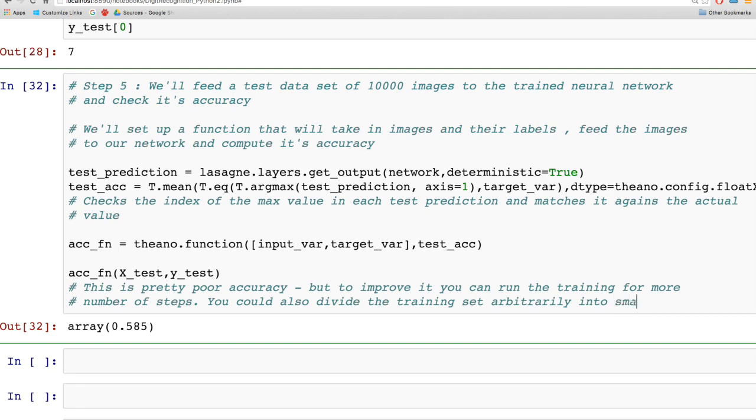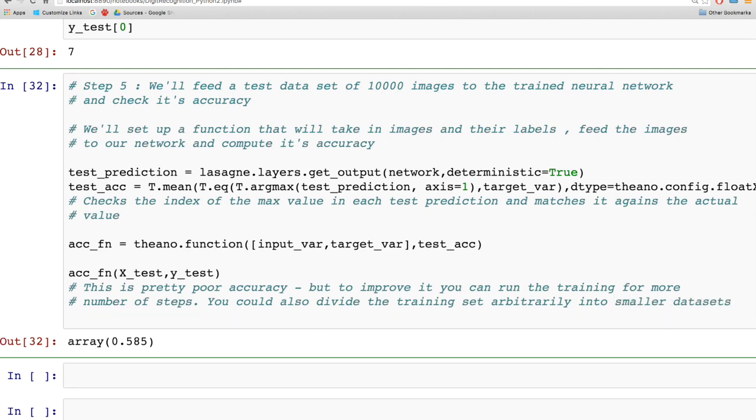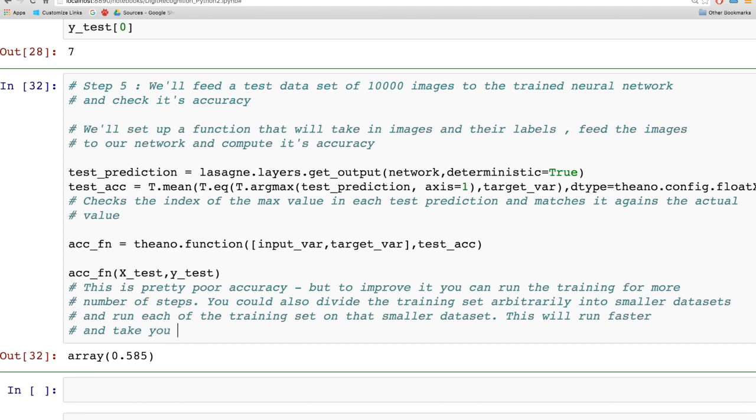You could also divide the training data into smaller datasets and run training on each smaller dataset in each step. This makes training faster and helps you reach a convergence point faster. With a smaller number of steps, you'd reach minimum error faster.